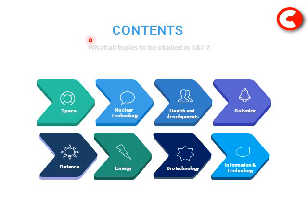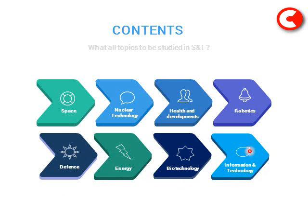Now about the contents — what are the topics to be studied in science and tech? There are eight sections to science and tech, each will be discussed separately in separate videos. The first section is Space, then Nuclear Technology, Health and Developments, Robotics, Defense, Energy, Biotechnology, and Information Technology. All these sections together make up science and tech, and you will have to learn all these sections thoroughly.